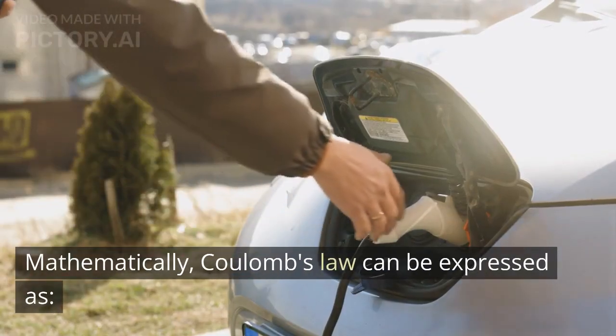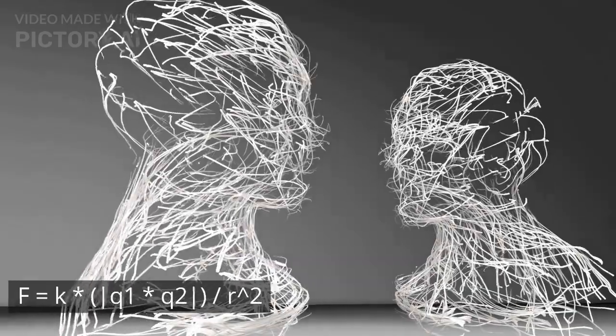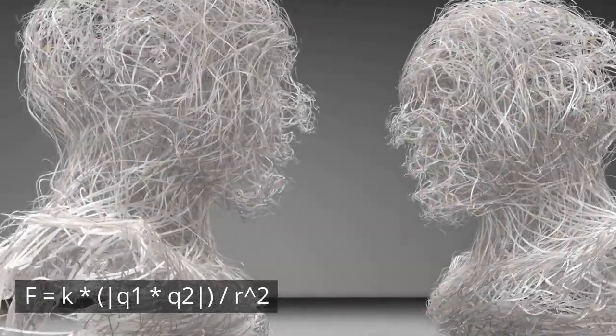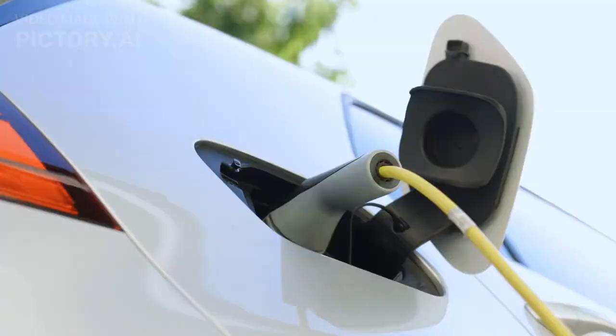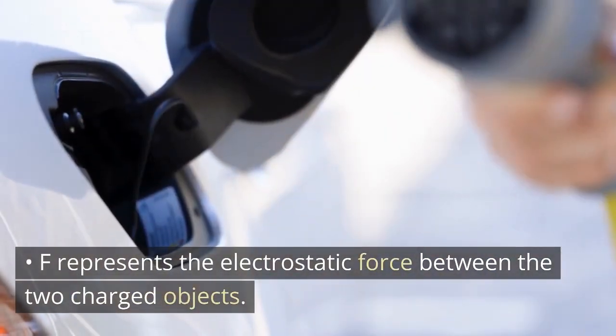Mathematically, Coulomb's law can be expressed as F equals K times Q1 Q2 over R squared, where F represents the electrostatic force between the two charged objects.